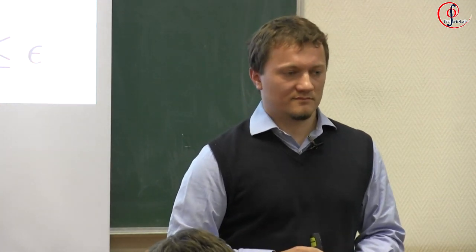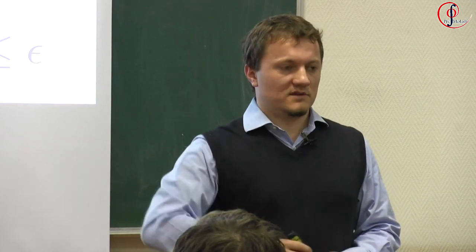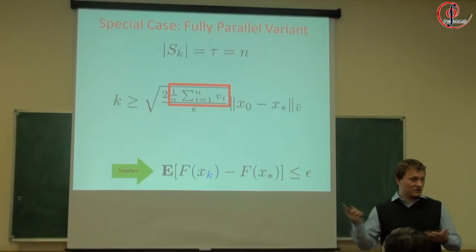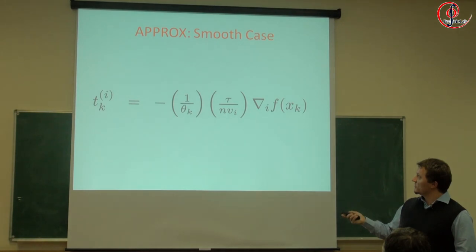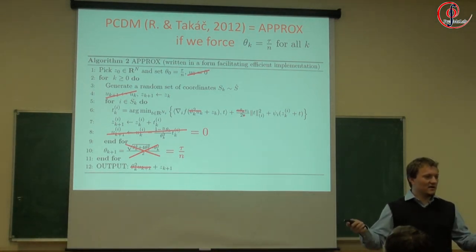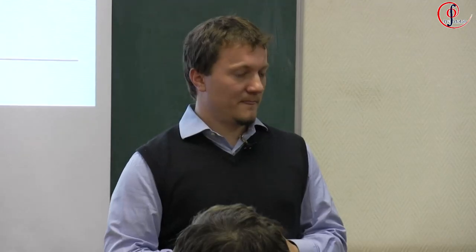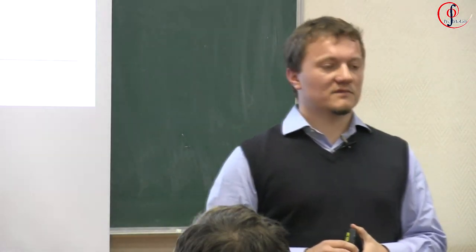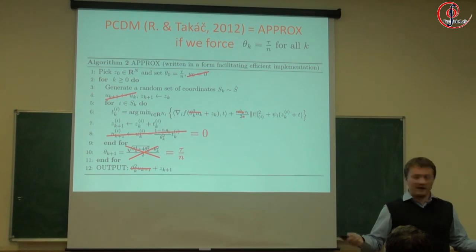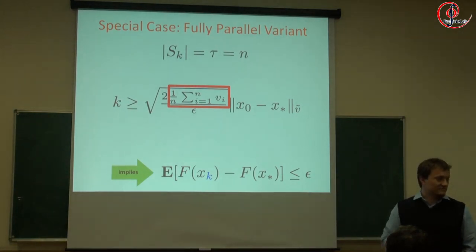Regarding complexity: at every iteration you need tau partial derivatives. If tau is equal to n, in one iteration you actually need all the partial derivatives at the same point — so that's just one gradient evaluation. So the number of gradient evaluations is the number of iterations in that case. Each processor needs to do as much work as the average number of non-zeros in a column of A — that's the complexity of one iteration.